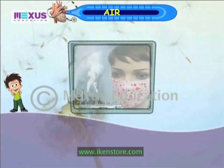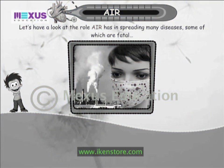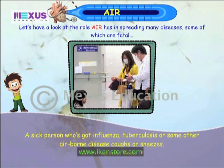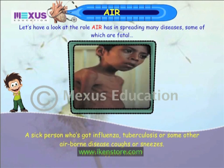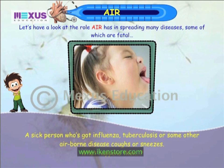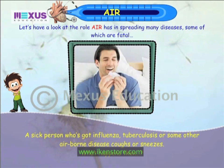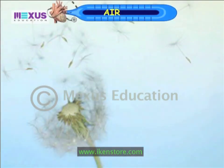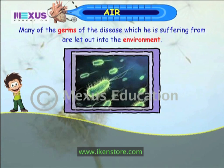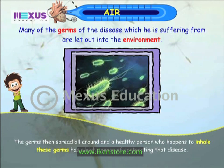Let us have a look at the role air has in spreading many diseases, some of which can be fatal. A sick person suffering from influenza, tuberculosis or some other airborne disease coughs or sneezes, and many of the germs are let out into the environment. The germs then spread all around, and a healthy person who happens to inhale these germs has a high chance of contracting that disease.